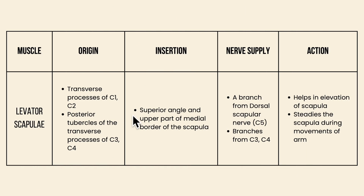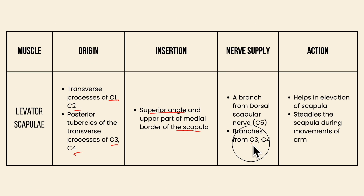To concise the points of the levator scapulae: it originates from the transverse processes of C1, C2, C3 and C4. It inserts onto the superior angle and the upper part of the medial border of the scapula. Its nerve supply is a branch from the dorsal scapular nerve and also branches from the C3 and C4 spinal nerves. Its action is elevation of the scapula and it also steadies the scapula during the movements of the arm.